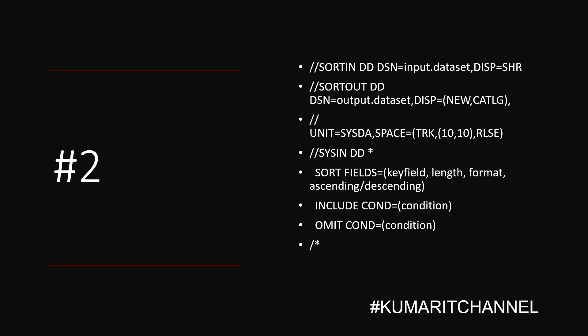To understand the sort card, you have to connect and imagine why we are using it — it will be very interesting. The include condition is greater than $1,000, so that would pass through. And we are trying to omit the condition if there are negative balances — we don't want those records. So this sort card plays a very important role.